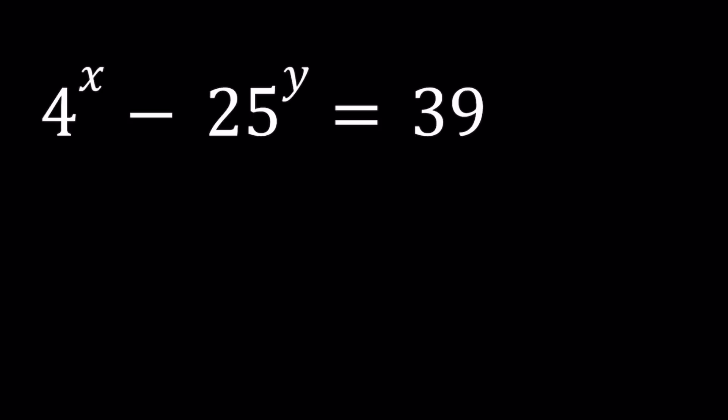The first thing that I'd like to do is notice that 4 and 25 are both perfect squares. So we can go ahead and write them as 2 to the second power and 5 to the second power. I'm going to solve this equation, find all the solutions, or if there are no solutions, I'm just going to indicate that. And I'll also show you a graph of this relation, which is kind of interesting.